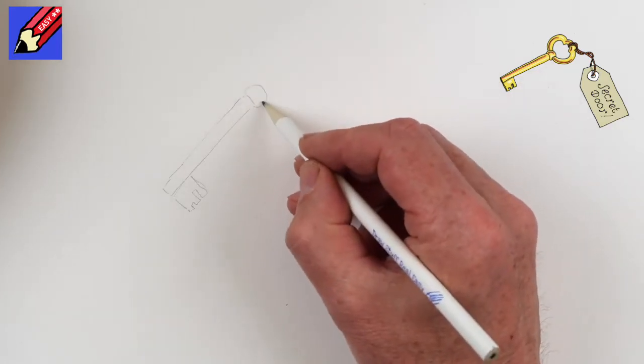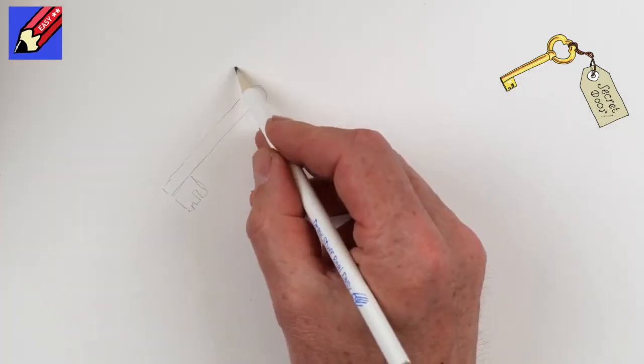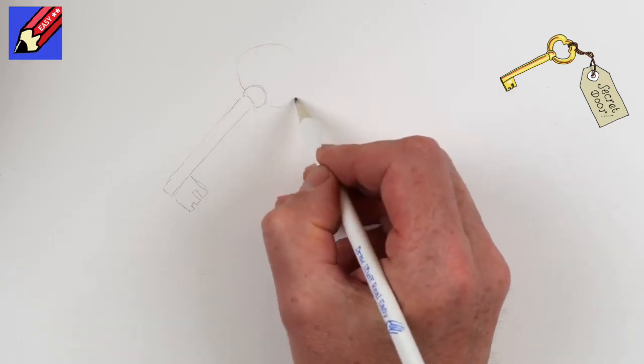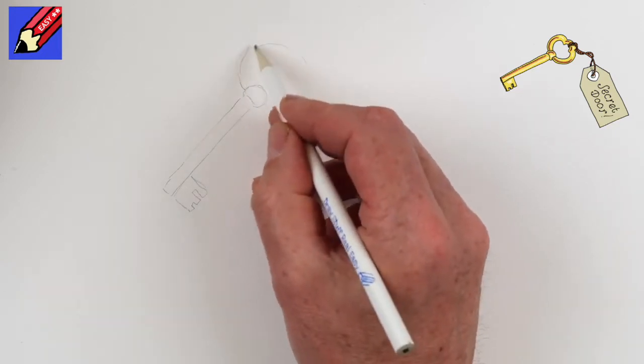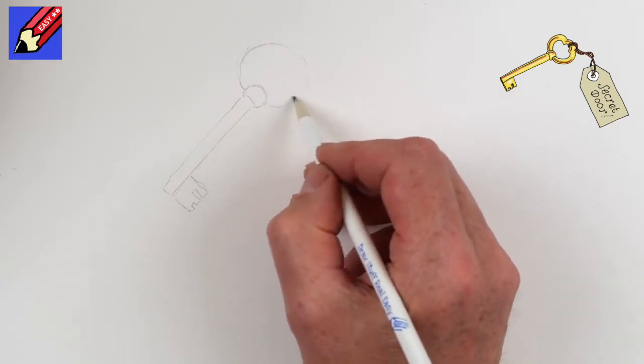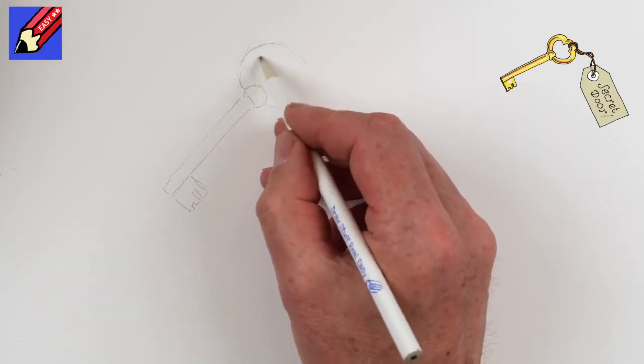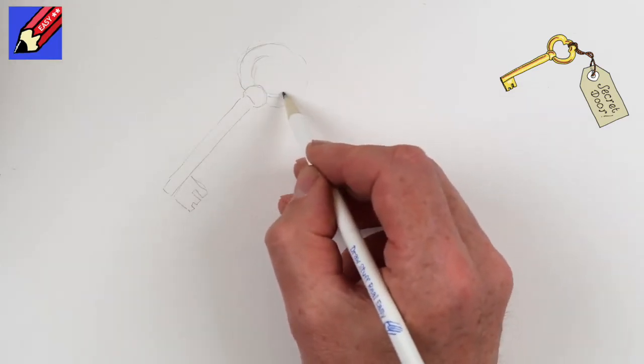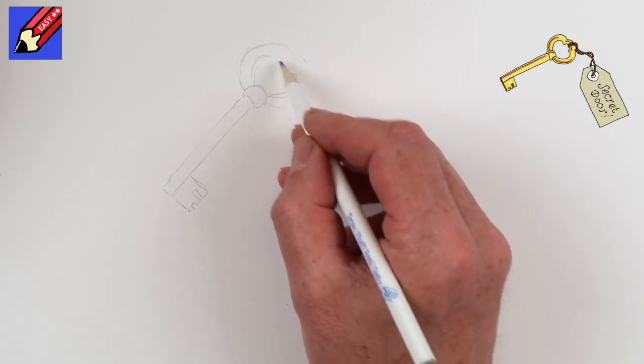Then I'm going to draw a circle coming around there. It's a slightly squashed circle, and that will come around like that too, but I'm going to bring this down a bit like that.